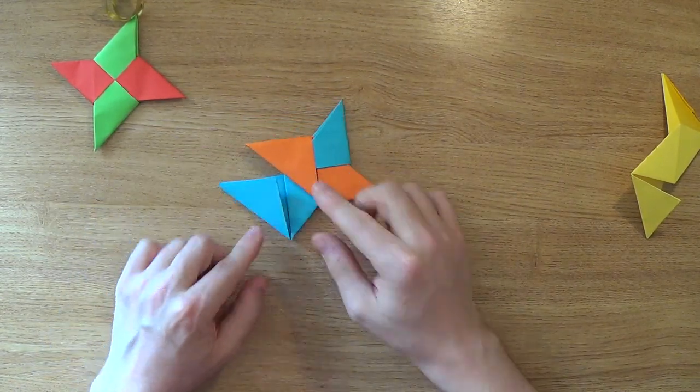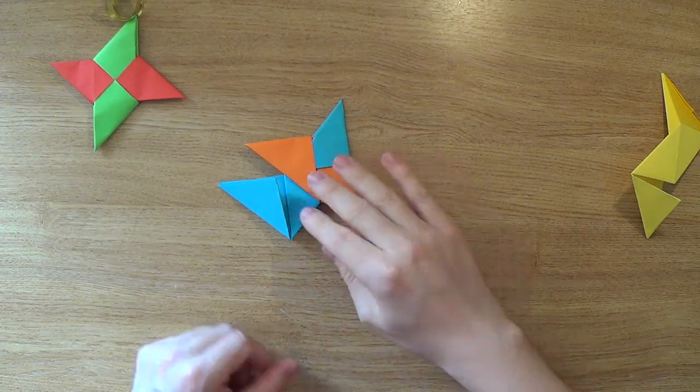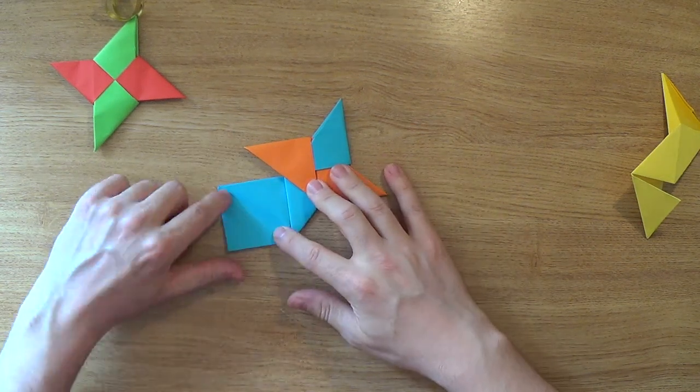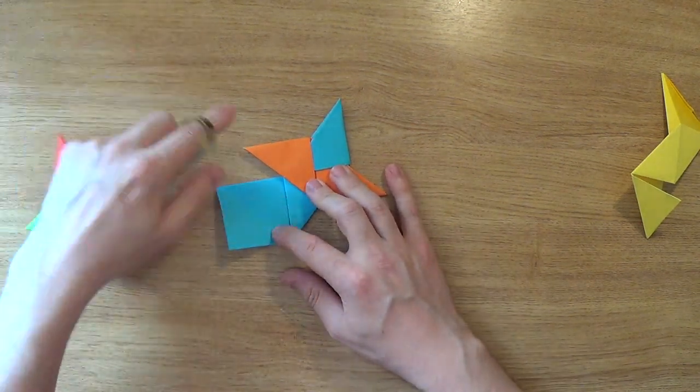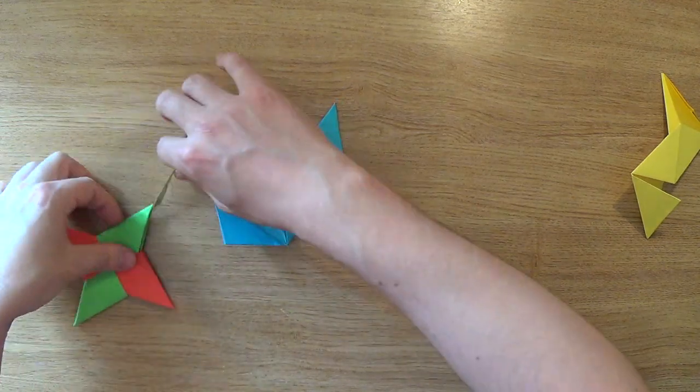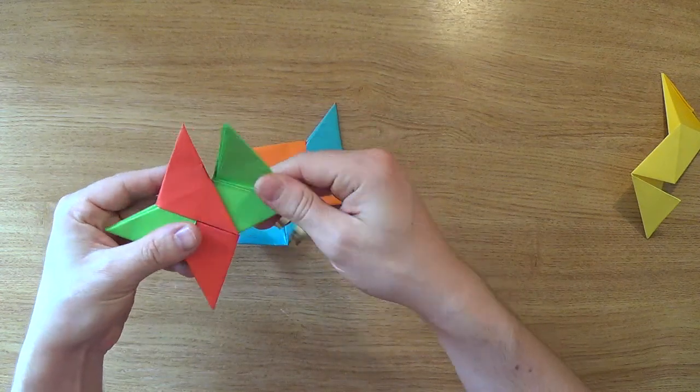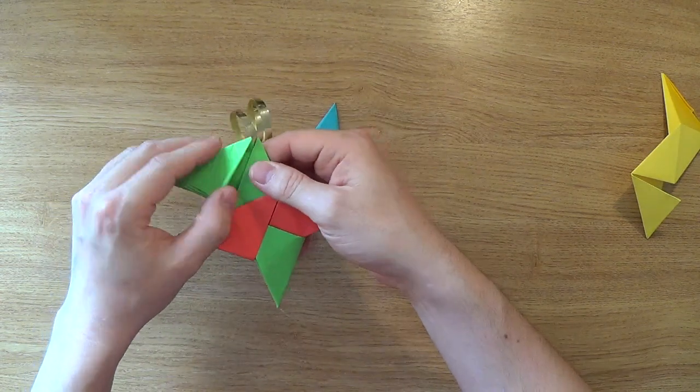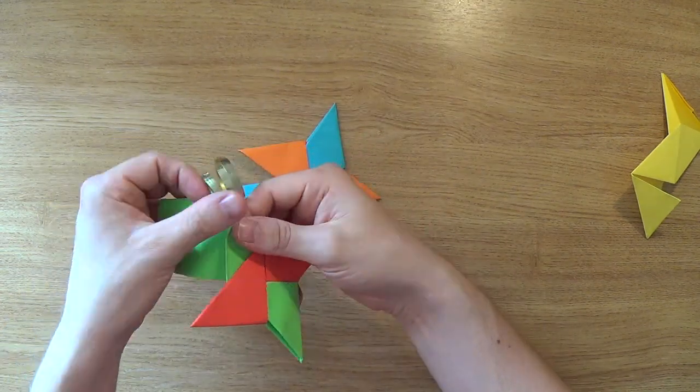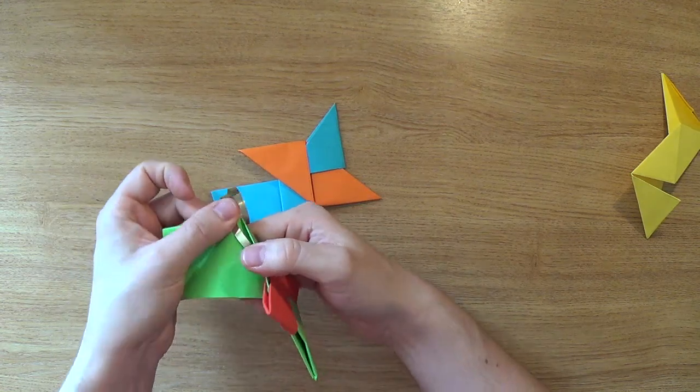Now this last one, this last one is a bit special. So what we're going to do is this fold here if you want a piece of string to attach to it and you don't want to have to glue it. What we're going to do is we're going to put the string underneath that fold just there.